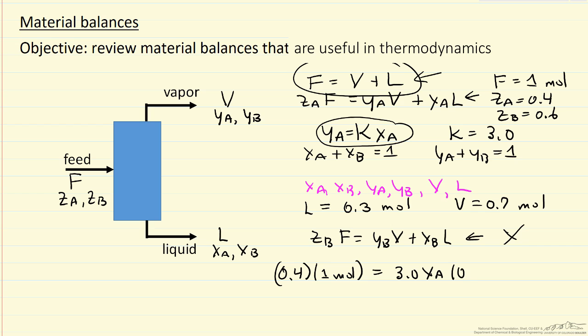So I'm going to write V is 0.7 moles plus XA times 0.3 moles. So now I have an equation with only unknown as XA, and if I solve for XA I get 0.166, multiply that by 3, I get YA is 0.50. So I solve for the mole fractions, of course I can get YB and XB from these equations.